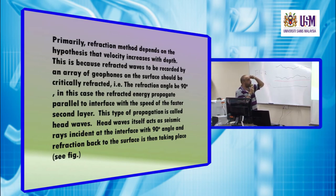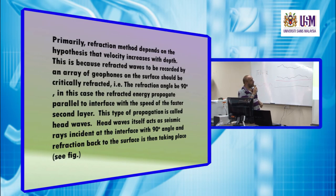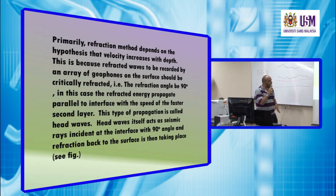This is because refractive waves to be recorded by an array of geophones on the surface should be critically refracted. Critically refracted means that it must refract with an angle equal 90 degree from the normal to the interface, meaning that the ray moves parallel to the interface itself with the velocity of the second layer, of the higher velocity layer. And then it acts as an incident ray with angle 90 degree. It will refract back to the surface with the critical angle of incidence and then record it back on the surface. The propagation parallel to the interface is called head waves.